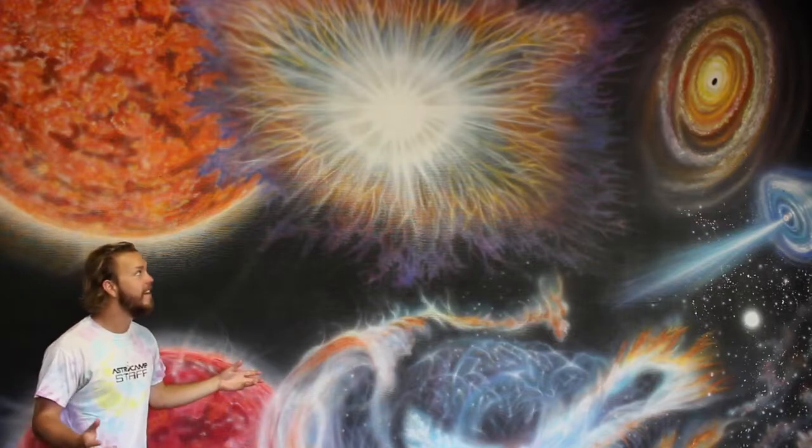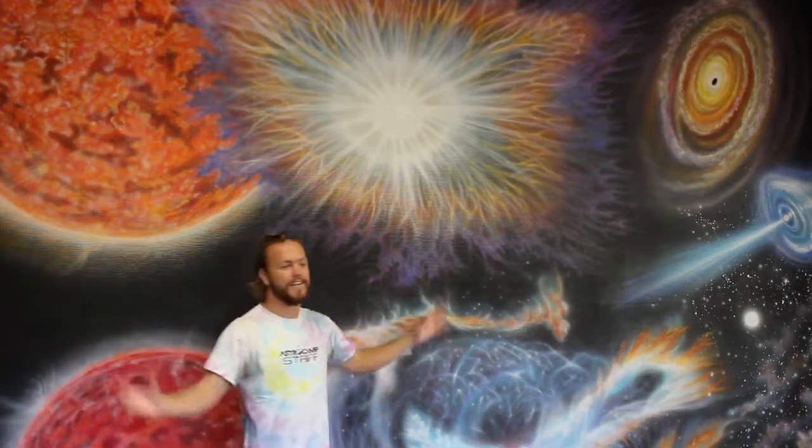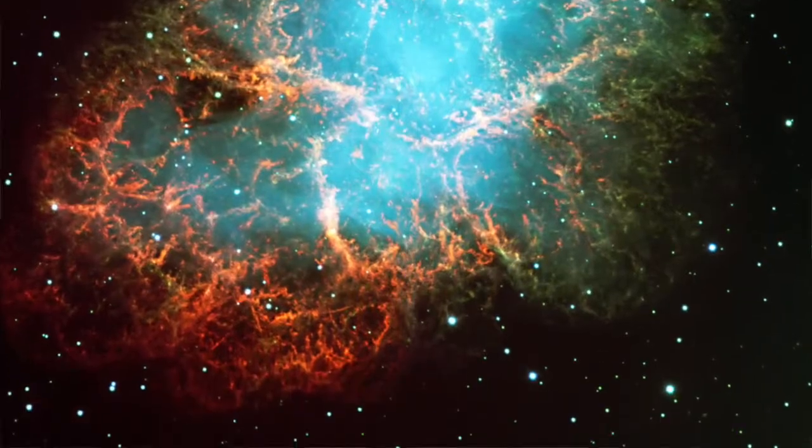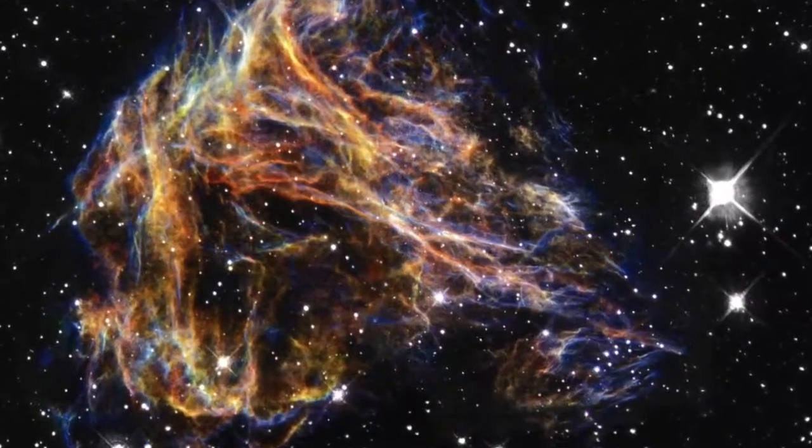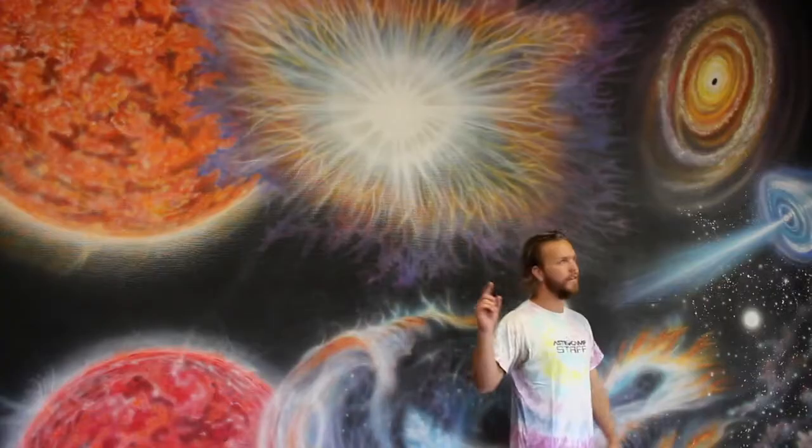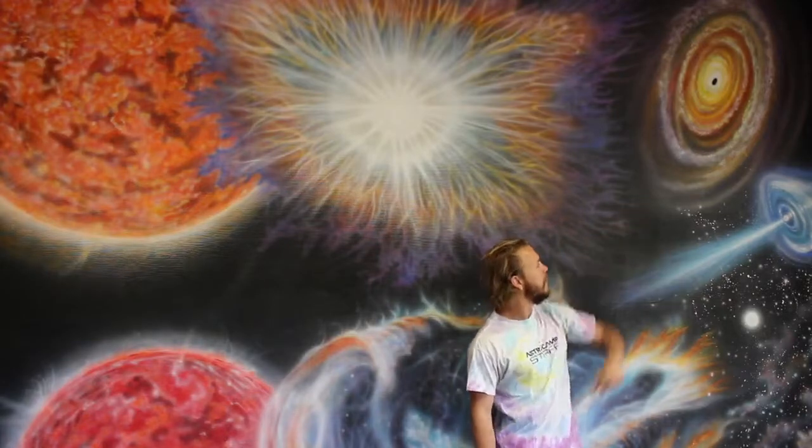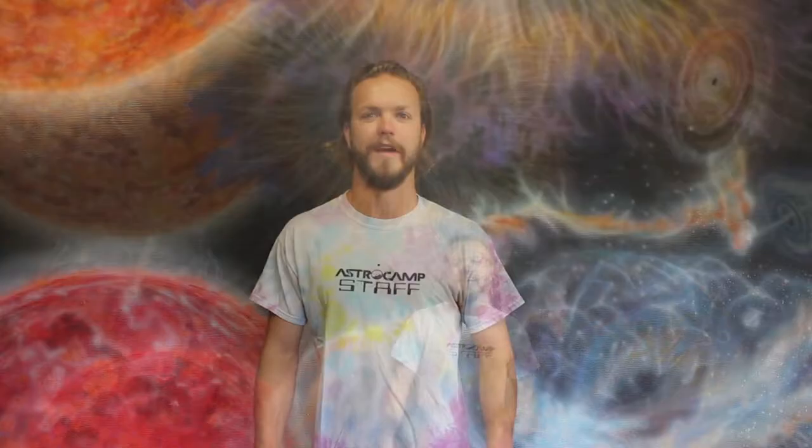And then they're going to blow off. They're going to explode in this awesome explosion called a supernova and send all of this stuff out into space, and they're going to leave behind one of two things, either a black hole or a spinning neutron star called a pulsar. It might be weird, but that's science.